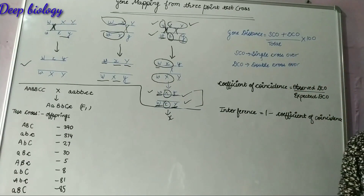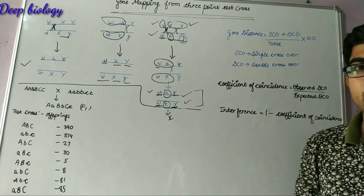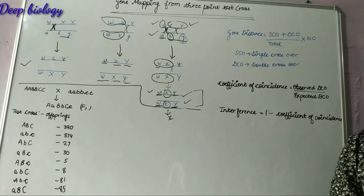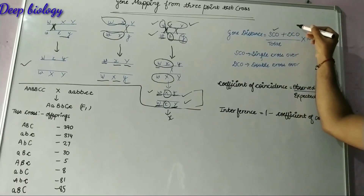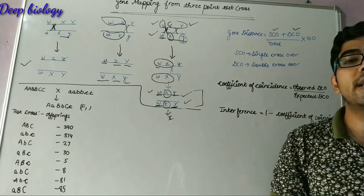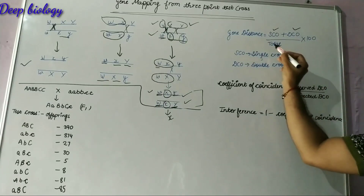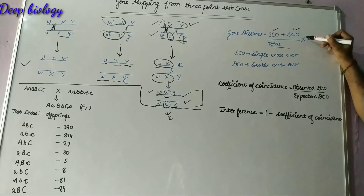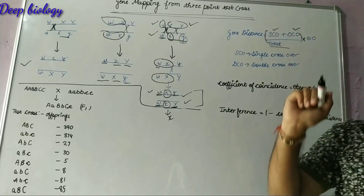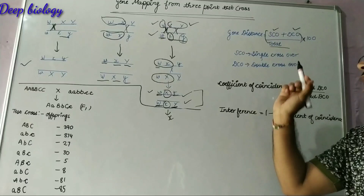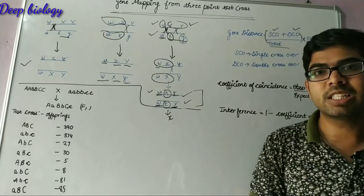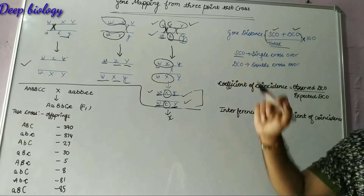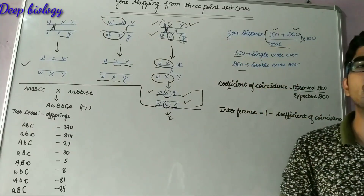How do we find genetic distance? Genetic distance is found by summing up the single crossover (SCO) product and double crossover (DCO) product, dividing by the total number of offspring, and then multiplying by 100. In this way we can find the genetic distance between two genes.